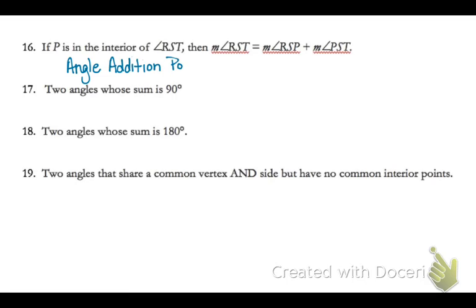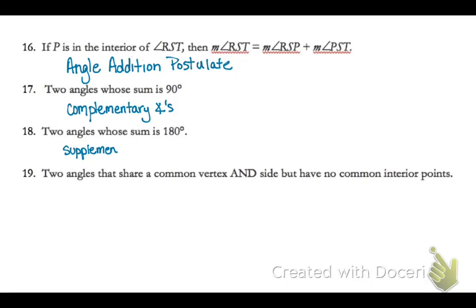And 15, angles with the same measure are congruent angles. Two parts of an angle equal the whole angle is the angle addition postulate. 17, sum of 90 degrees is complementary, and sum of 180 degrees is supplementary.